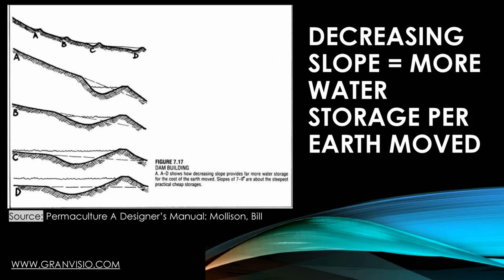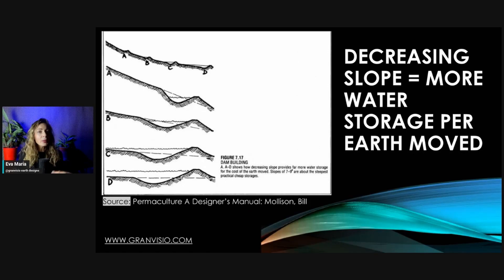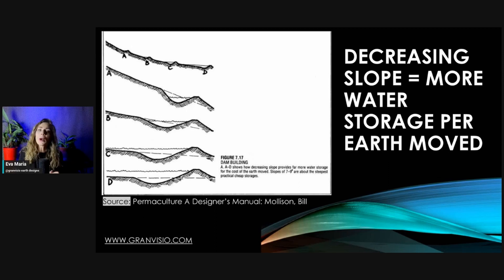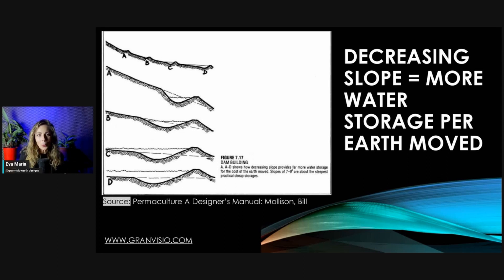When looking for large storage, we walk the valley floor and find where it levels. We can apply our observation principle and notice, when it rains, where the water speeds up — that is where we are going to have to move a lot more soil. Where water is moving slowly, that could be the floor of our pond. Where it starts to speed up, that is where our dam wall will go.